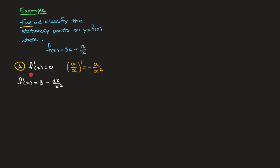Remember, we have to solve f'(x) equals 0, which is the same as solving 3 minus 12 over x squared equals 0. To solve this, I'm going to write the entire left-hand side over x squared. Multiplying 3 by x squared gives 3x squared minus 12 over x squared equals 0. The only way this fraction equals 0 is if the numerator equals 0 — the denominator plays no part.